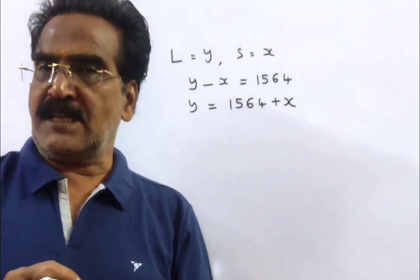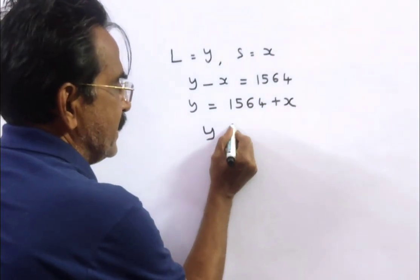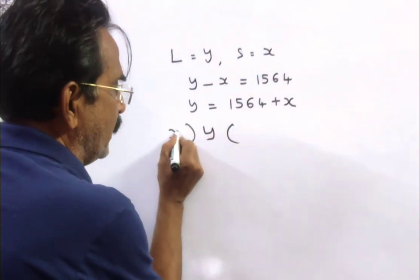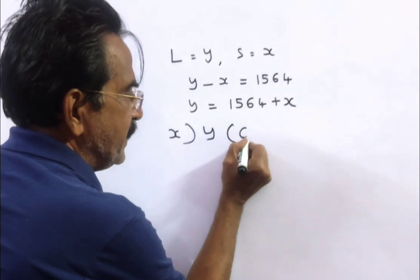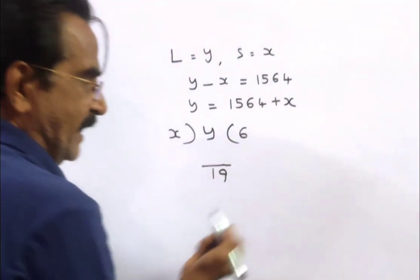Friends, it is also given that if the larger number is divided by the smaller number, the quotient is 6 and the remainder is 19.